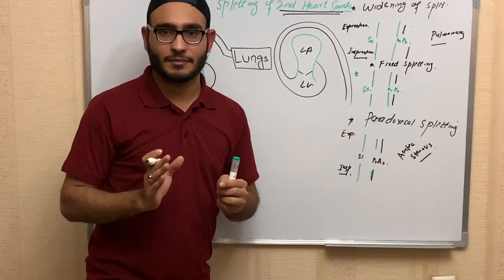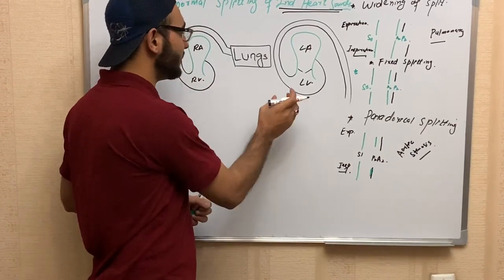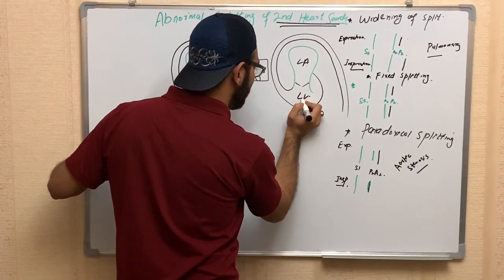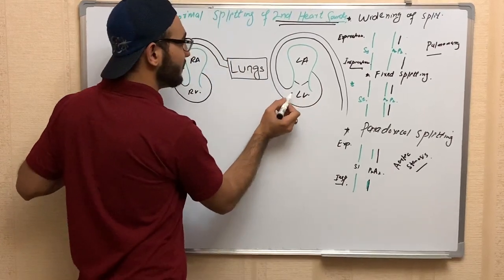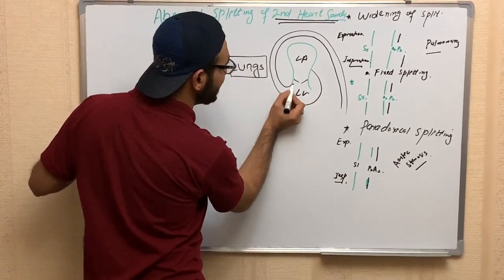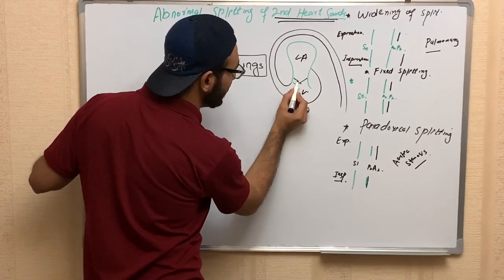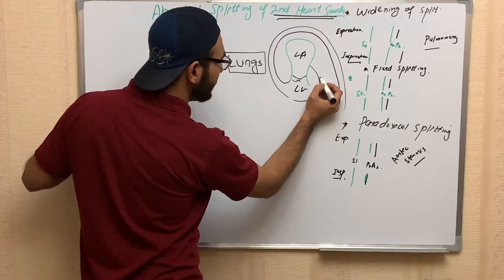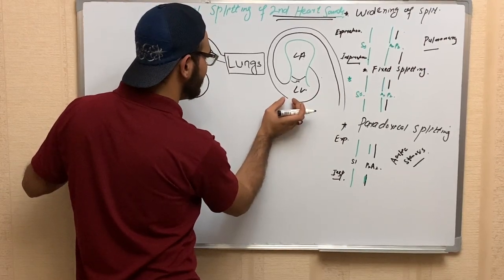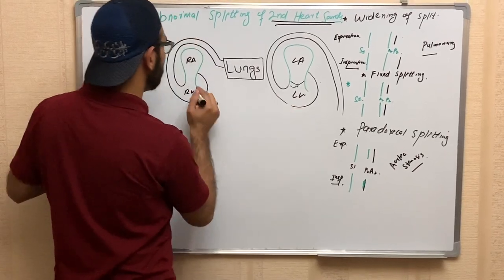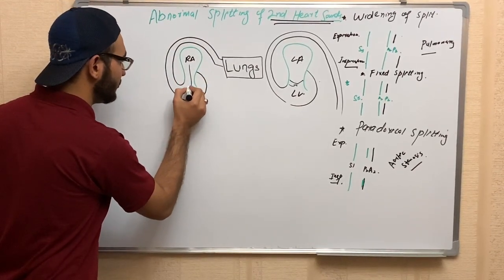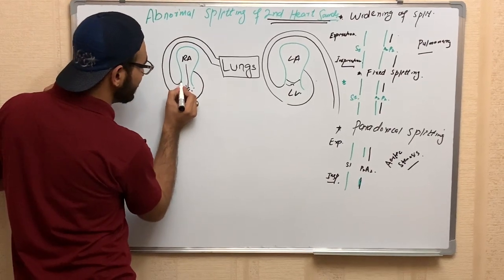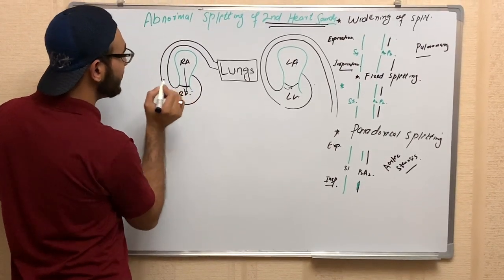On the left side, blood enters from the left atrium into the left ventricle. Due to the high concentration of blood in the left ventricle, the blood slightly moves back, and at that time the valve closes. On the left side, this valve is called the bicuspid valve. On the right side, when blood enters from the right atrium to the right ventricle, this valve is called the tricuspid valve.